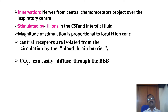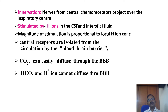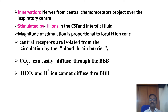Carbon dioxide can easily diffuse through the blood-brain barrier, but bicarbonate and hydrogen ions cannot diffuse through it. So carbon dioxide enters through the blood-brain barrier and reaches the interstitial fluid or CSF, where it is converted to hydrogen ions, which then stimulate the central chemoreceptors.